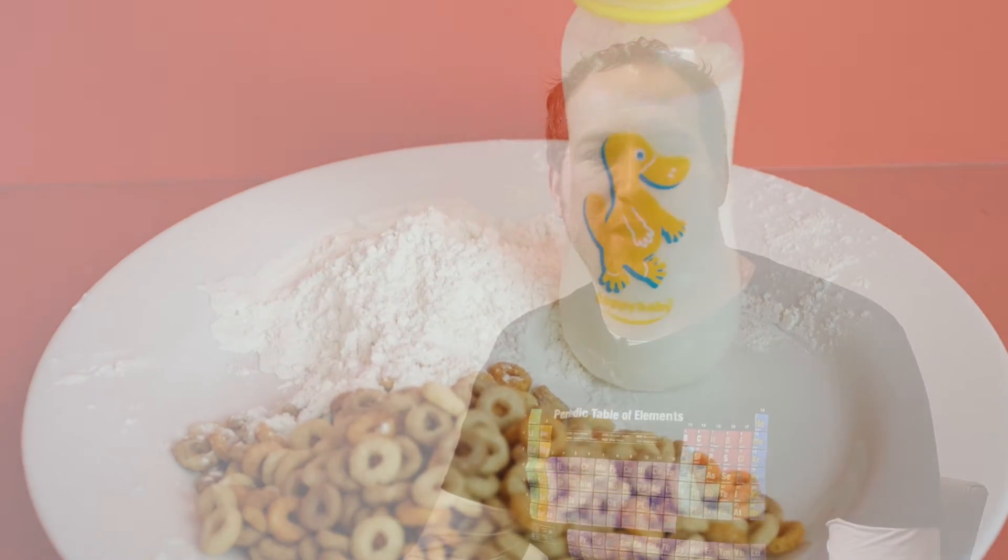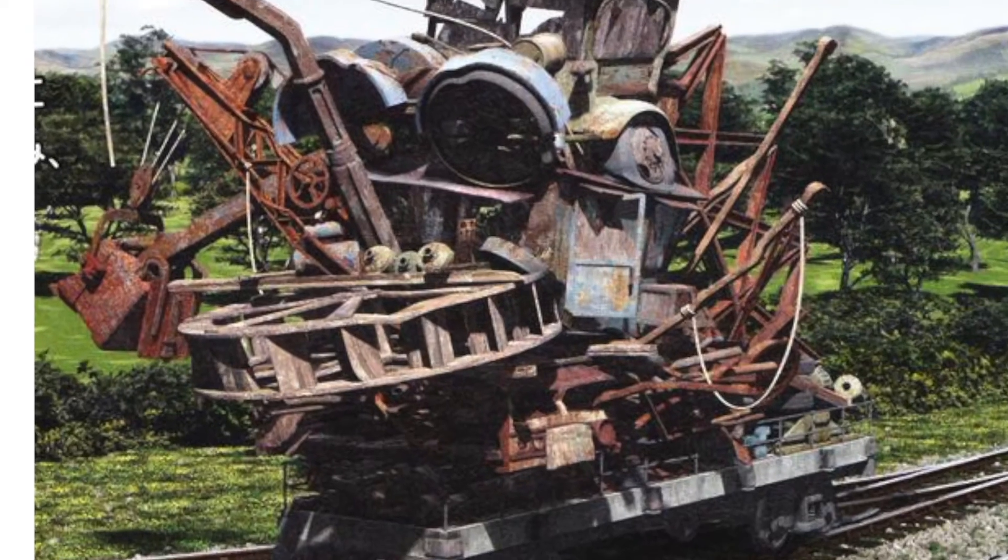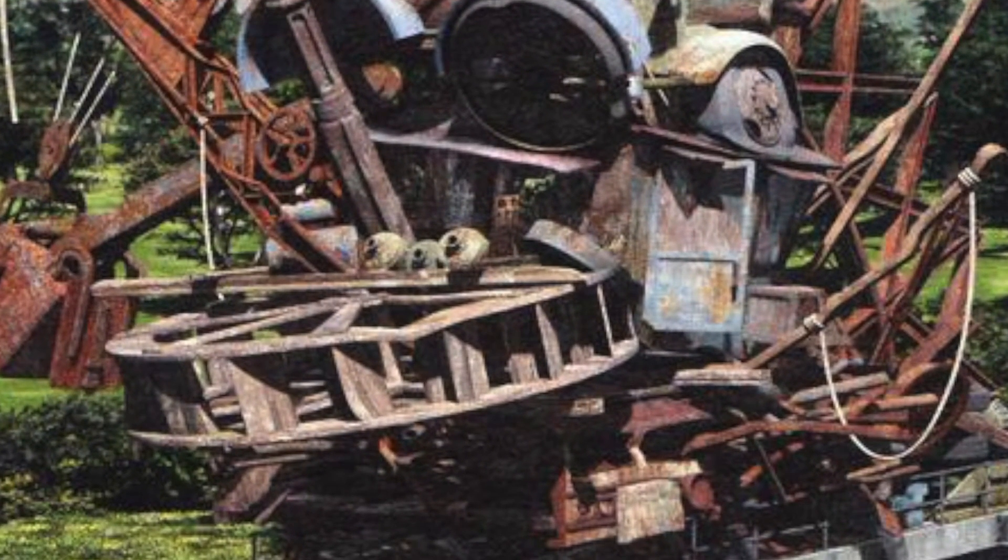Cereals, processed grains and flours often have iron added, something manufacturers are typically not shy about letting us know. In many countries it's even mandatory, with policies dating back to the 1930s designed with the intention of reducing anemia in the general population. Back then, it wasn't uncommon for ground up iron filings taken from disused railway tracks to be tossed into batches of flour.